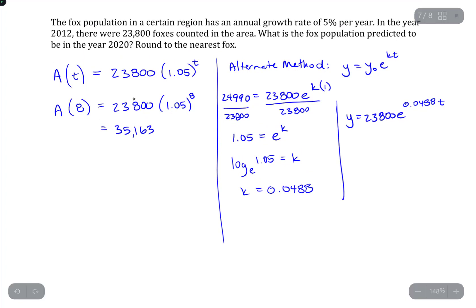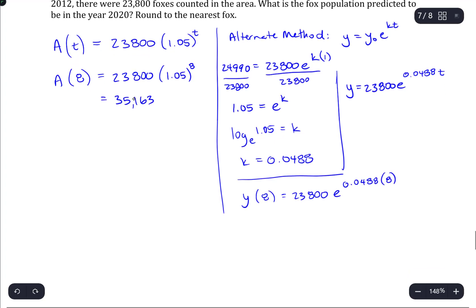Now, if we want to know what the population is in the year 2020. So, we're going to go from 2012, which is the starting point. And, 8 years later, we're at 2020. So, now we need to plug in 8 into this formula.